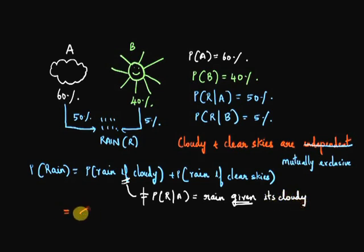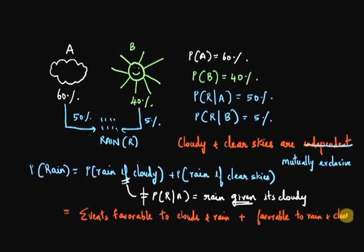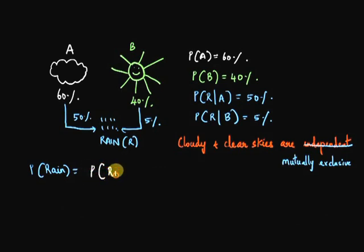So my probability of rain if it's cloudy in the afternoon will be events favorable to both afternoon clouds and evening rain. And my second term here will be events favorable to a sunny afternoon and evening rain. And that should be nothing but P of R intersection A, events favorable to A or afternoon clouds and R or evening rain, plus P of R intersection B, sunny afternoon and evening rain.